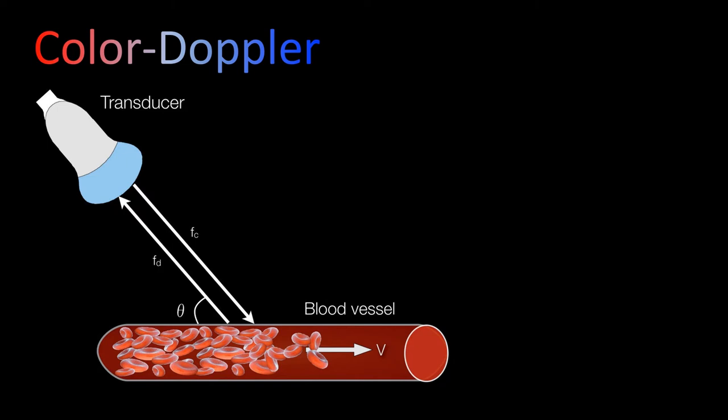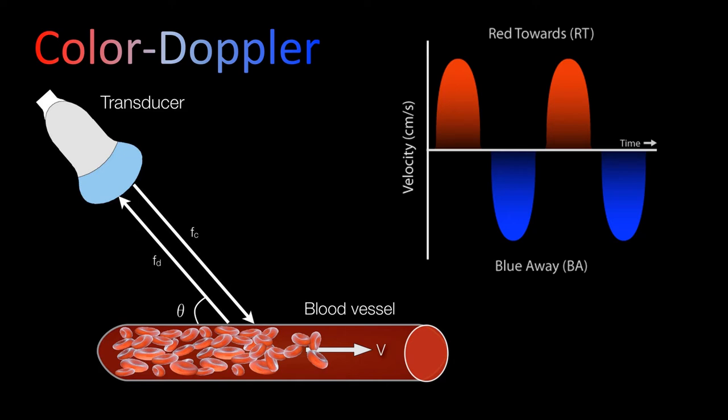If the red blood cell is moving away from the probe, the reflected wave will have a lower frequency, whereas if the red blood cell is moving towards the probe, the reflected wave will have a higher frequency. In medical ultrasound, blood flow moving towards the probe will be seen as red, while blood flow moving away from the probe will be seen as blue.